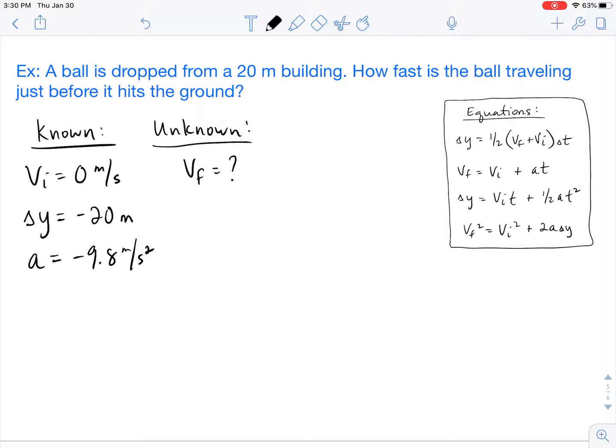Now when it comes to free-fall problems, you have about four equations to choose from. So that's what you see on the right side of your screen there. And the most difficult part is picking the right equation. The easiest way to pick the right equation is to take a look at your knowns and your unknowns and figure out which variable is not even listed.